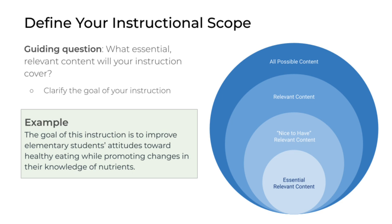We can see from this example that it actually breaks down into two parts, so the instruction has two goals. One is to improve elementary students' attitudes towards healthy eating, and the other is promoting changes in their knowledge of nutrients. So there's kind of a cognitive goal and an affective goal.